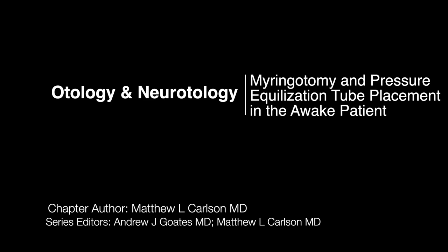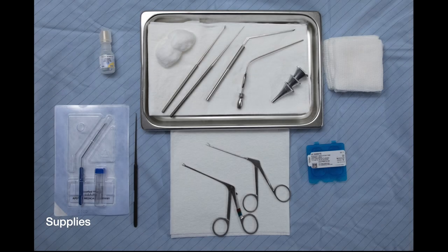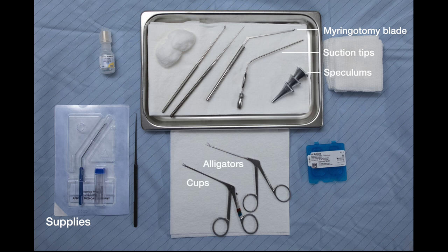Other important tools to bring include suctions with an assortment of 3, 5, and 7 Baron suctions, an assortment of speculums, a myringotomy blade, cup and alligator forceps, the PE tube of your choice, a phenol applicator with phenol, a pusher or right-angle instrument to maneuver the tube into position, and typically topical drops and a cotton ball.